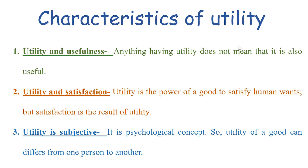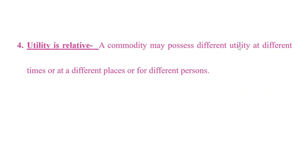The next characteristic is that utility is relative, which means that a commodity may possess different utility at different times, at different places, or for different persons. For example, wool and cloths have more utility in Kashmir than in Delhi or Mumbai. Again, an umbrella has more utility in the rainy season than in summer.